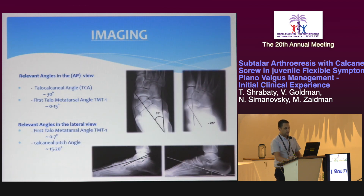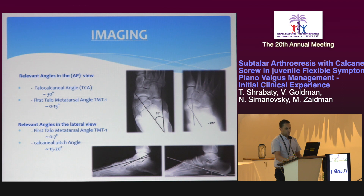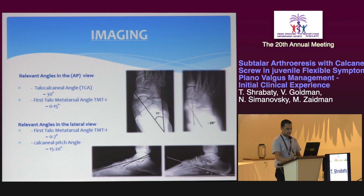In the imaging, I would like to present the relevant angles in the AP and lateral views. In the AP view, we have the talo-calcaneal angle, which measures the angle between the axis of the talus and the calcaneus. The first talometatarsal angle, TMT1, measures the angle between the axis of the talus and the line from the base of the first talometatarsal joint and the center of the talar head.